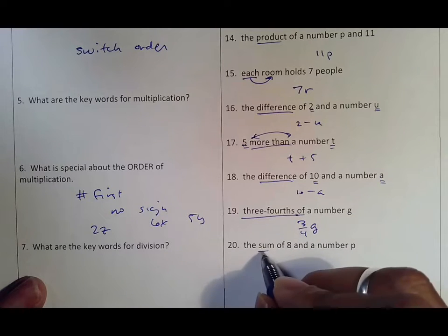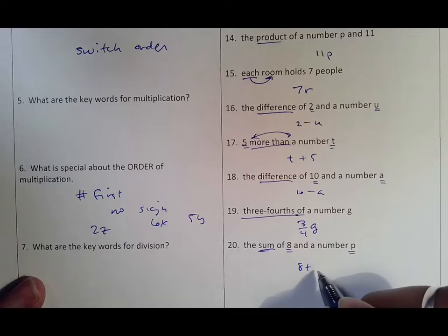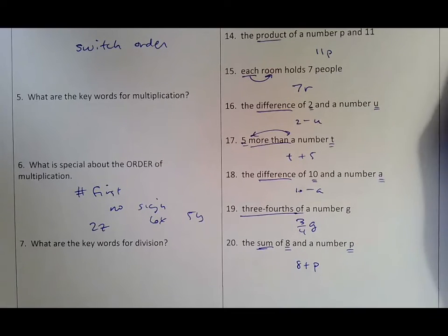The sum of a number eight and p: sum means add, eight is first, p is second. That's your answer. That's all it takes. So I sincerely hope that you're working to get this stuff down.